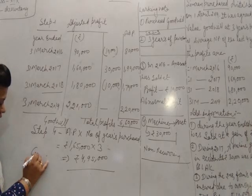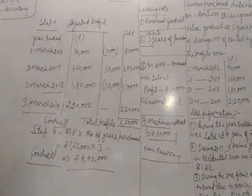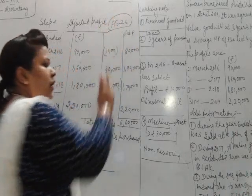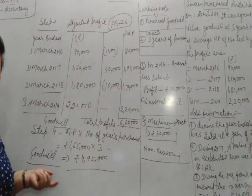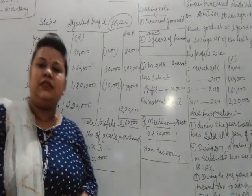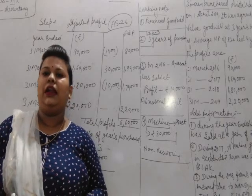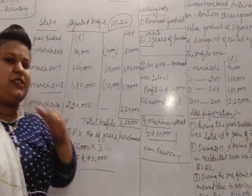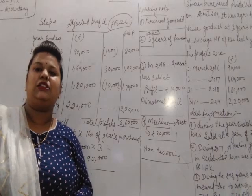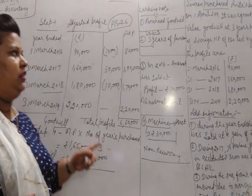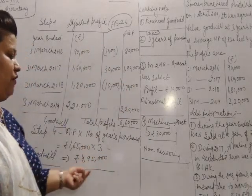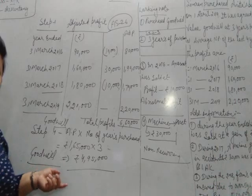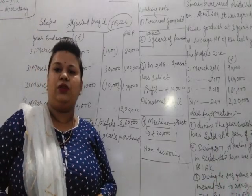The Goodwill valued here is purchased Goodwill. As per Accounting Standard 26, only purchased Goodwill will be valued — self-generated Goodwill cannot be valued. In this question, Simran purchased the business of Anita, so it is related to purchased Goodwill, and that is why we have done the valuation. We have completed all four steps and done the valuation of Goodwill.